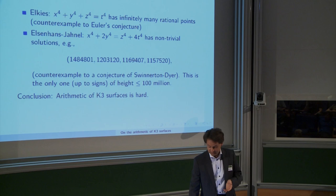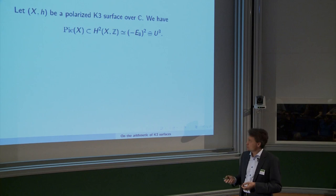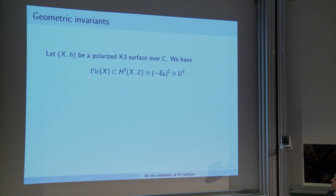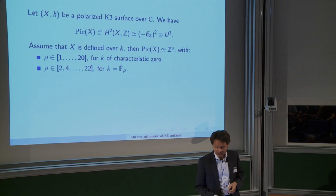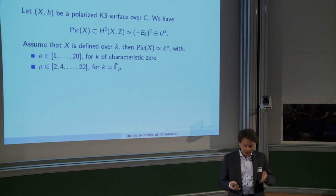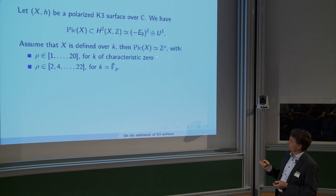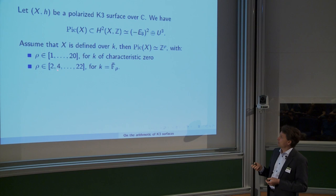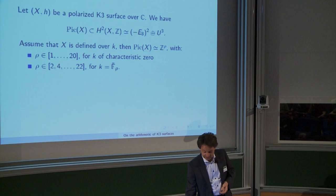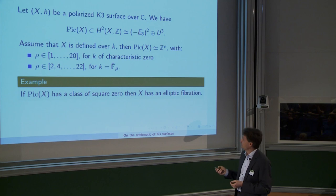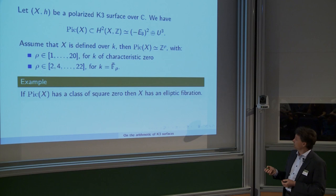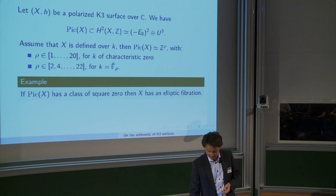What kind of geometric invariants are relevant? We have a polarized K3, its Picard lattice sitting in H2. The Picard group is Z to the rho, and rho can vary from 1 to 20 for fields of characteristic 0. Over F_p-bar we only allow even numbers, but can go up to 22. We have an intersection form on Picard from which we can learn geometric information. For example, if in the Picard lattice you have a class of square 0, then we have an elliptic fibration which we can use to prove something arithmetic.